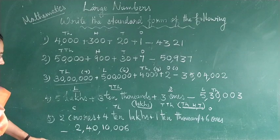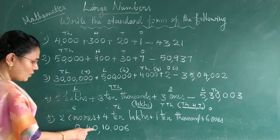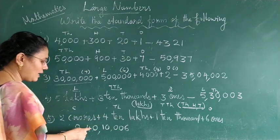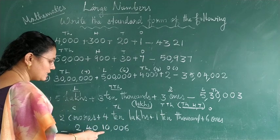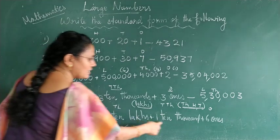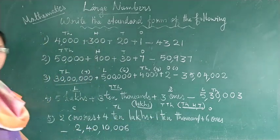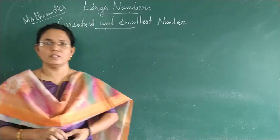We have to read this number: 2 crores, 40 lakhs, 10 thousand, 6. So the number is 2,40,10,006.